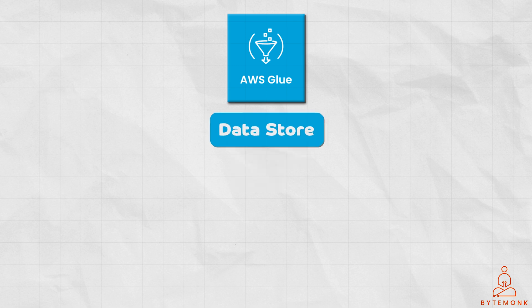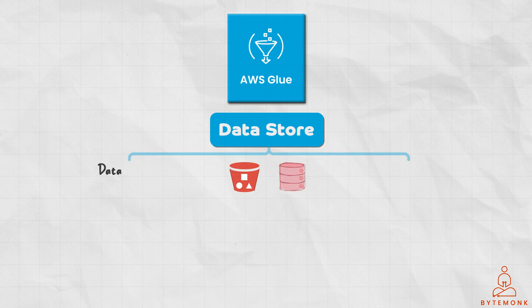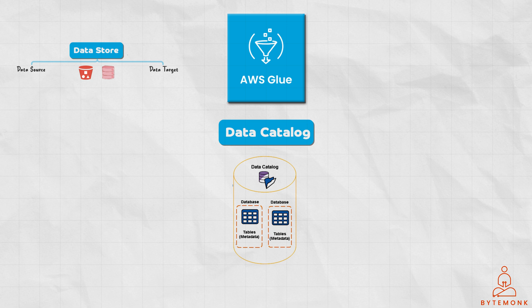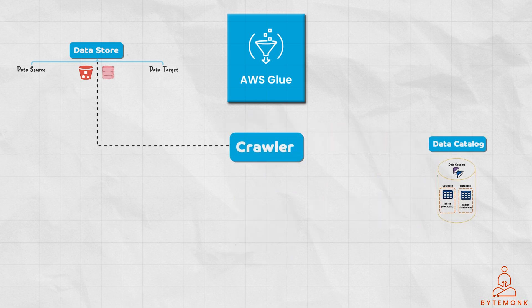There are three important components AWS Glue relies on to create and manage your ETL workflow. A data store is a repository for persistently storing your data — examples include Amazon S3 buckets and relational databases. A data source is a data store used as input to a process or transform. A data target is a data store that a process or transform writes to. The AWS Glue data catalog is a persistent metadata store containing table definitions, job definitions, and other control information to manage your AWS Glue environment, with one data catalog per AWS account per region. Finally, a crawler is a program that connects to a data store, determines the schema for your data, and creates metadata tables in the AWS Glue data catalog.